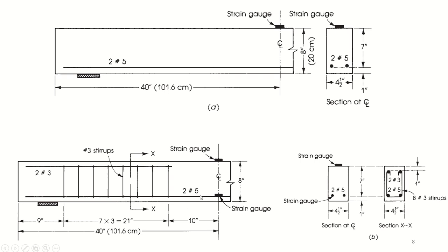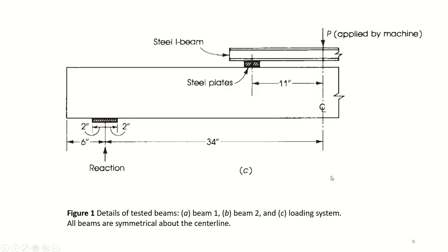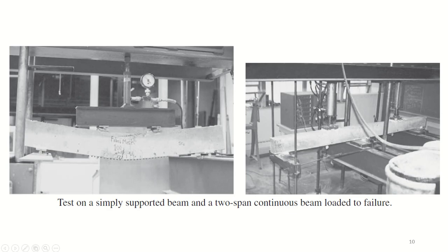In Beam 1, only longitudinal reinforcement is provided at the tension side. In Beam 2, the same two No. 5 longitudinal bars are used, but transverse stirrups and top bars are also provided. The load was applied on a steel I-beam and distributed onto the reinforced concrete beam — essentially a four-point bending test with two supports and two load points.